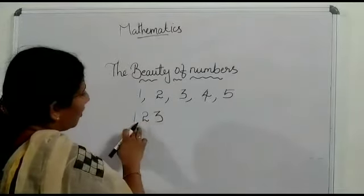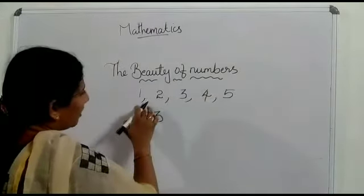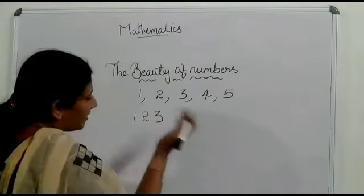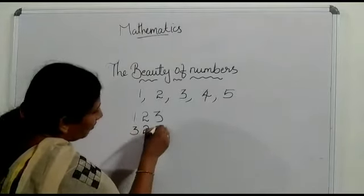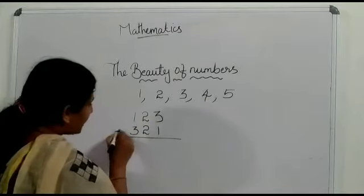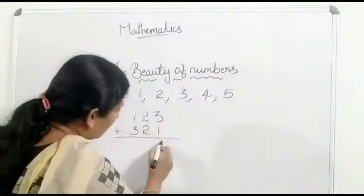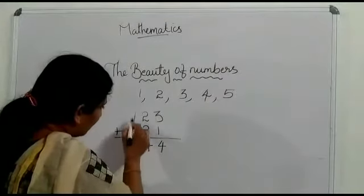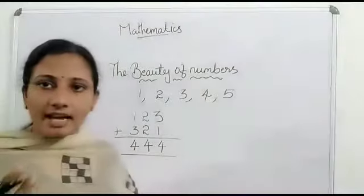Then, the smallest. These are the digits. Let us take these 3 digits. Using these 3 digits let us make a small number 123. Then which one is the largest number? Yes. This 3 here 2 1. This is the largest number. This is the smallest number. Then find its sum. 3 plus 1 is 4, 2 plus 2 is 4. 1 plus 3 is 4. 444 is the answer.